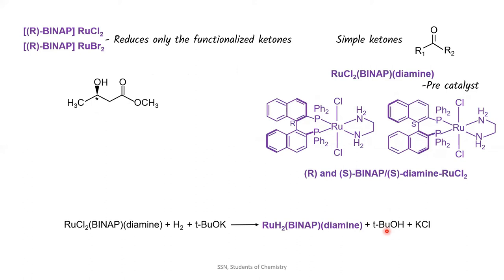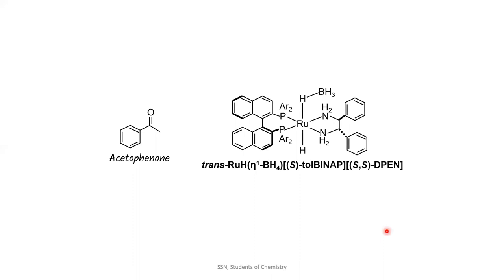For the sake of simple ketones, this Noyori's group took acetophenone and this catalyst. Here, T2-BINAP stands for 2,2-bis-di-4-tolyl-phosphenone-1,1-binaphthyl and D-PEN is just 1,2-diphenyl ethylene diamine.